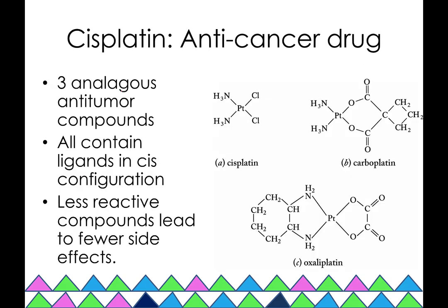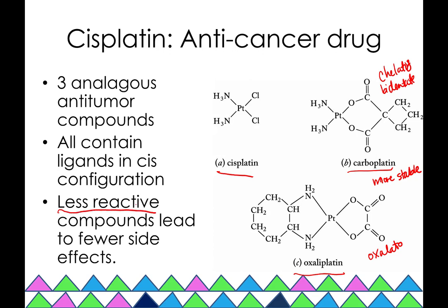Some analogous drugs to cisplatin have been produced, such as carboplatin and oxaliplatin. The difference is that these contain bidentate chelating ligands — an oxalato ligand in oxaliplatin and another bidentate ligand in carboplatin. Because these are bidentate rather than monodentate ligands, the complexes are more stable and less reactive due to the chelate effect, which leads to fewer side effects.